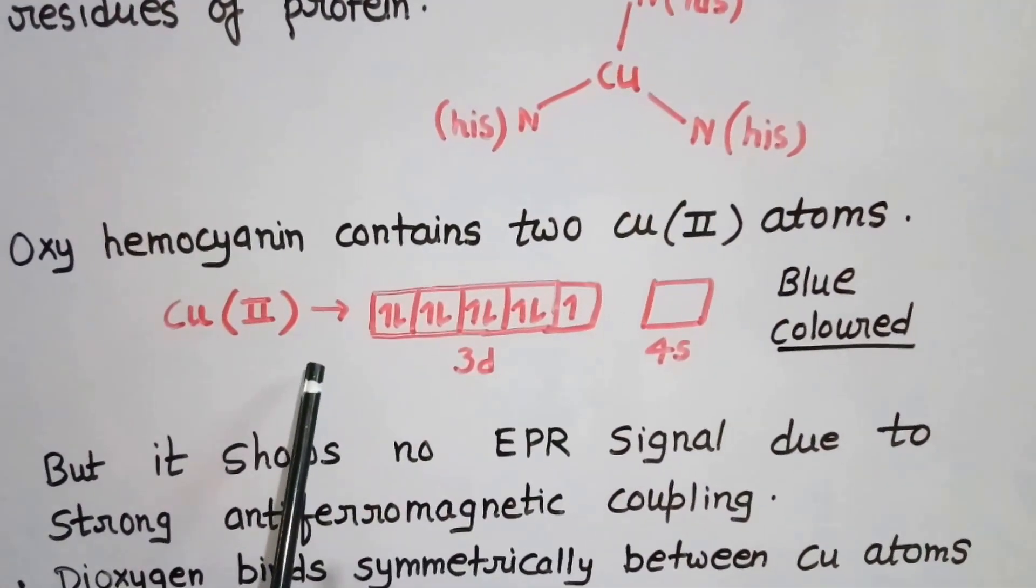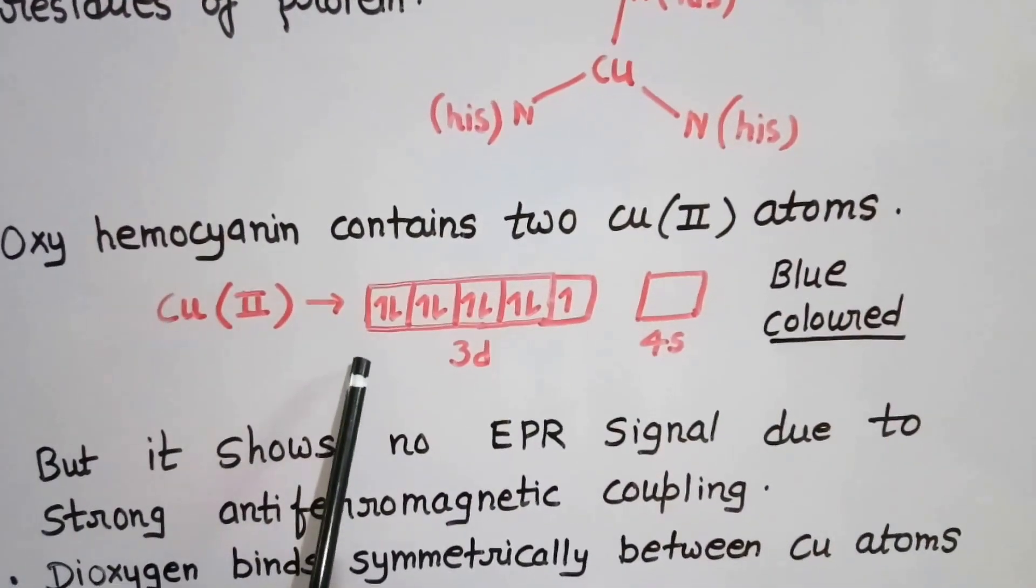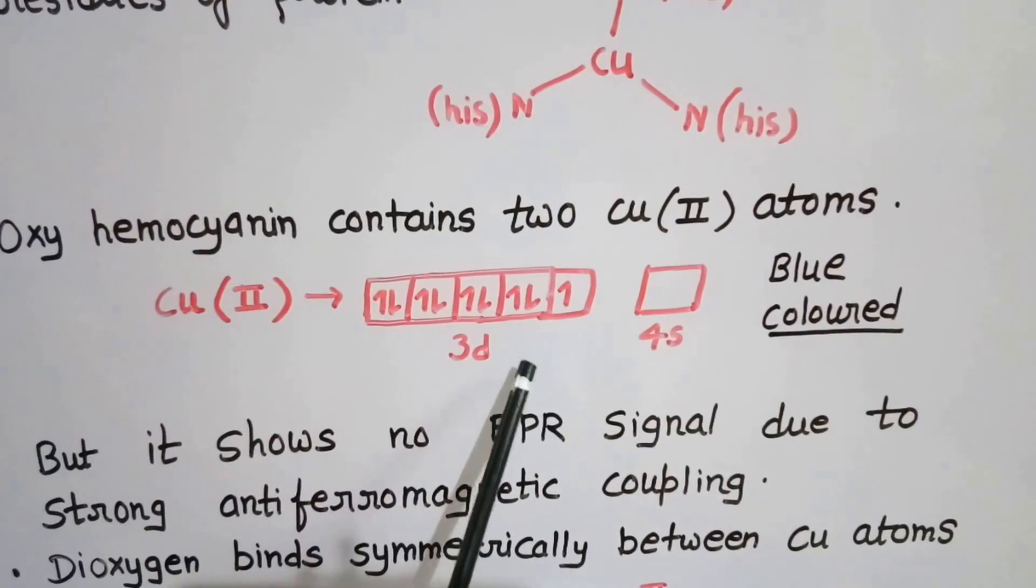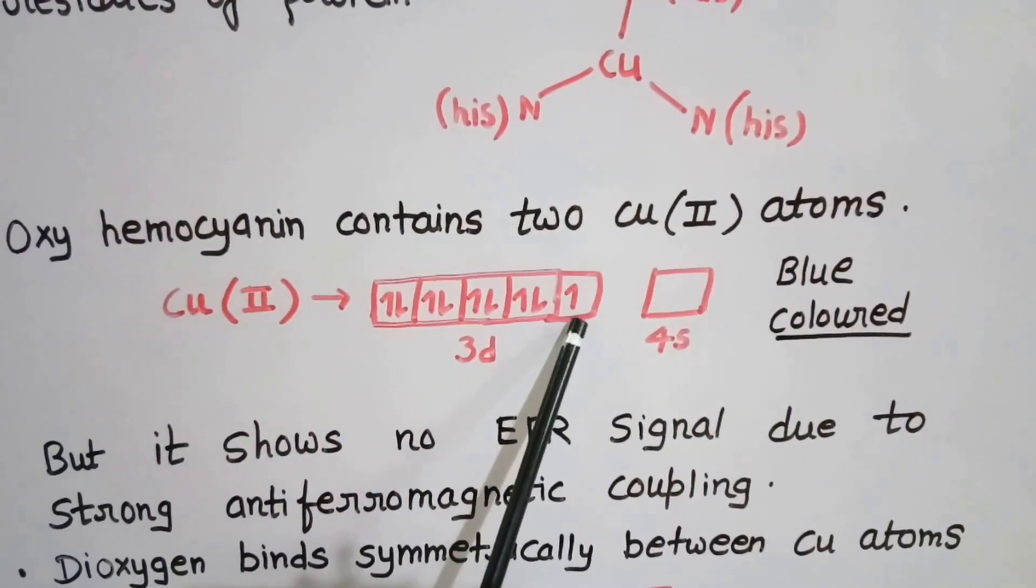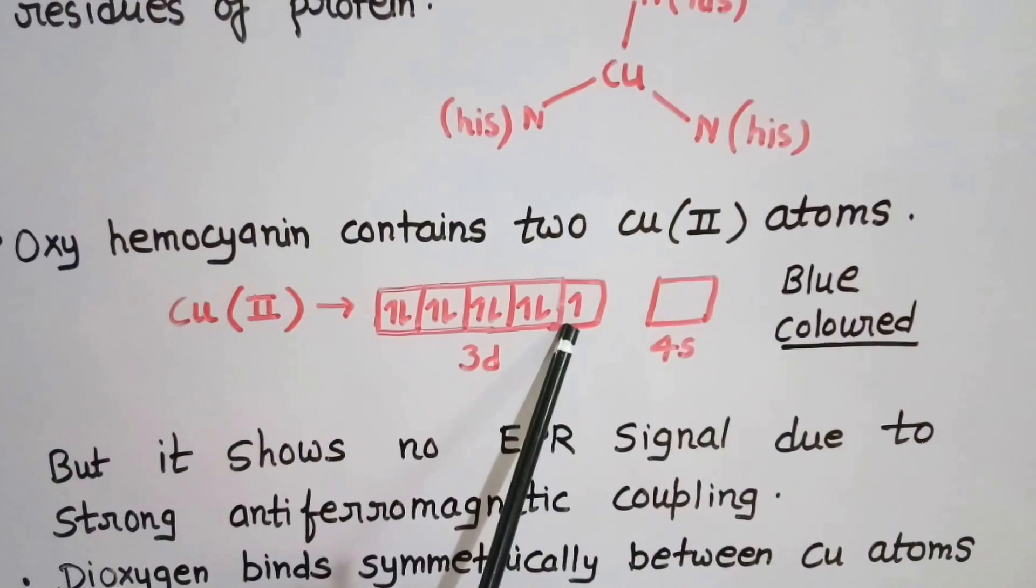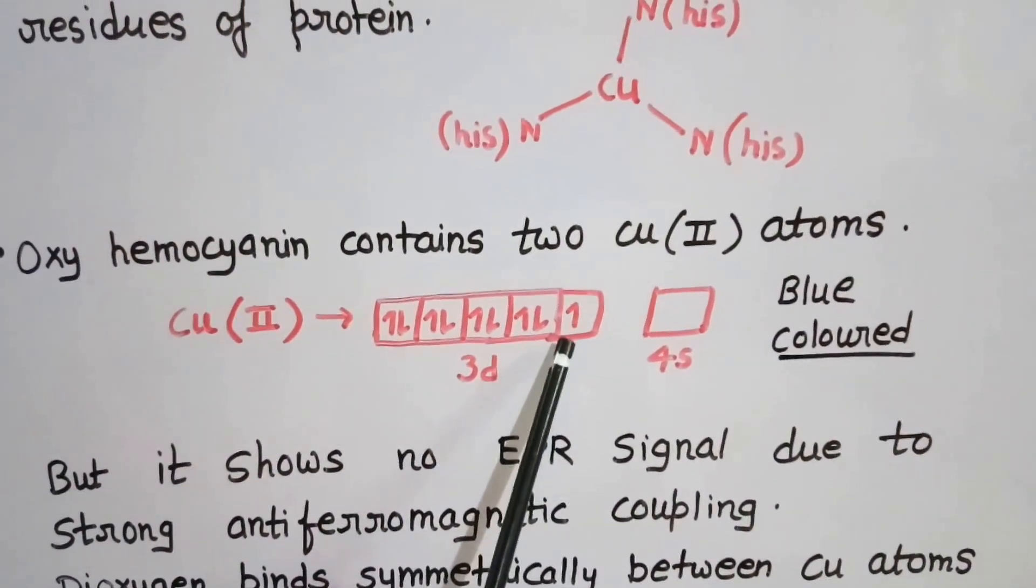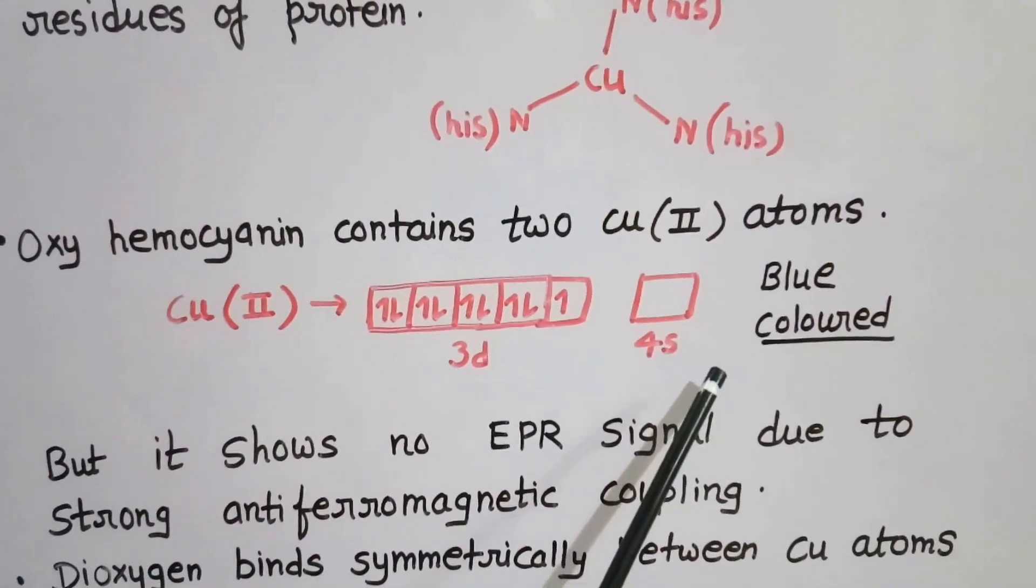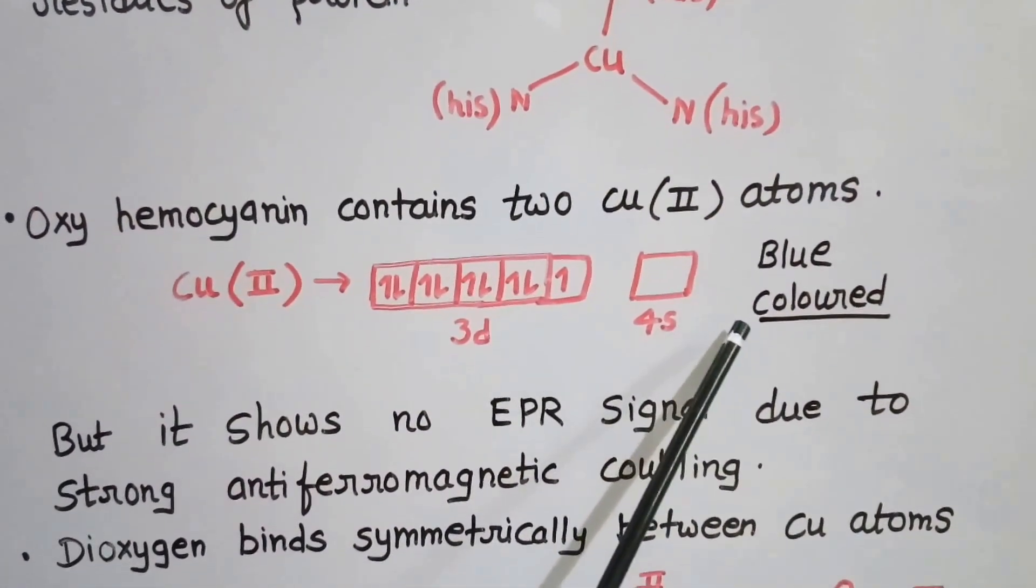Copper in +2 oxidation state possesses nine electrons in the 3d orbital, meaning it is in the d9 state with one unpaired electron. This unpaired electron is responsible for the blue color of Cu(II). Hence, oxy hemocyanin is a blue colored pigment.